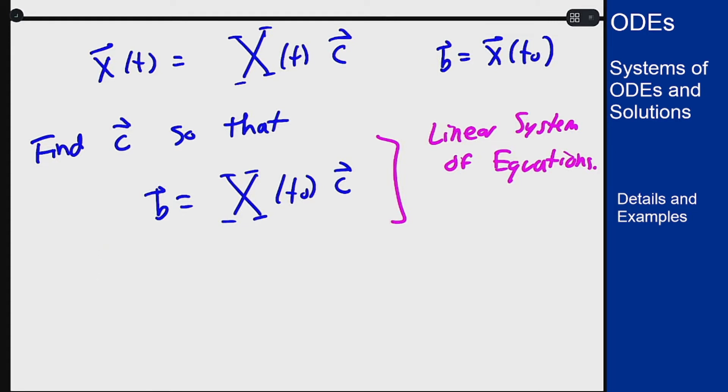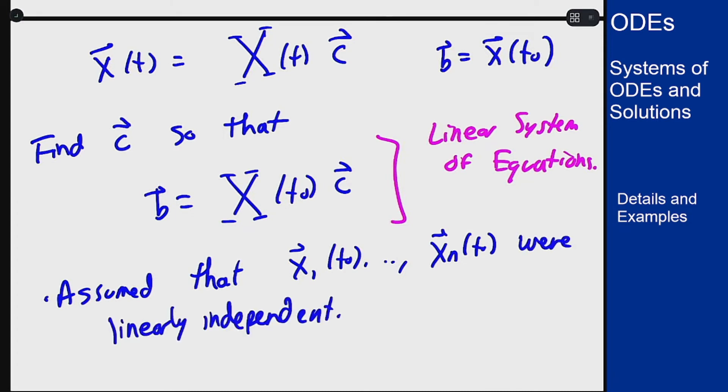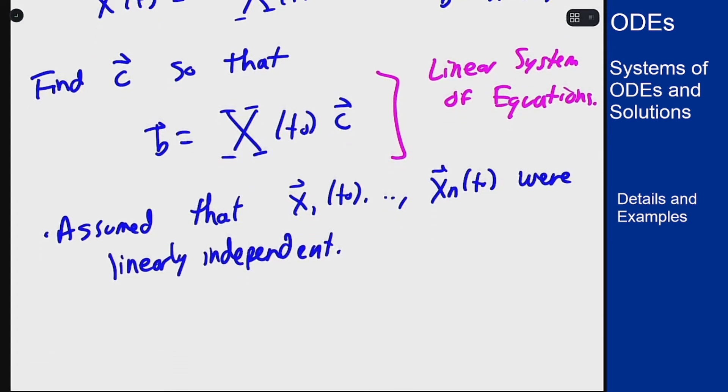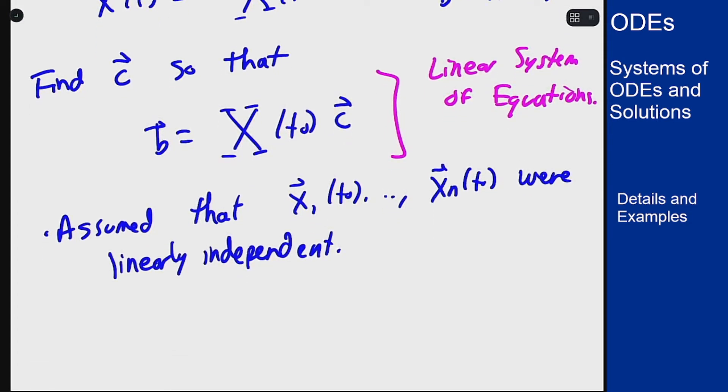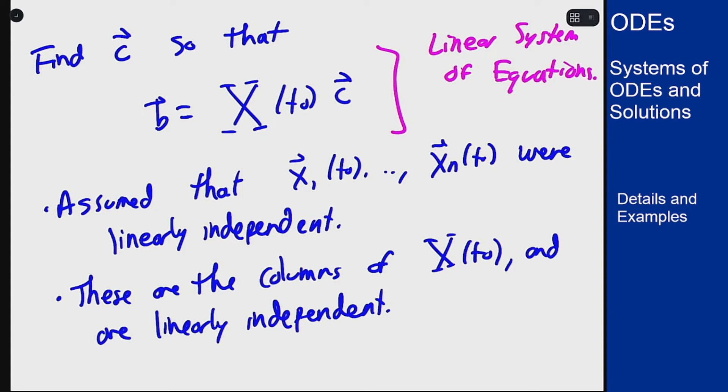Remember we assumed that the vectors x1 at t0 up to xn at t0 were linearly independent. Since this matrix here, X of t0, has these as columns, which means the columns of this matrix are linearly independent. From our theory we then know that the rank of this matrix is n and so it is invertible.